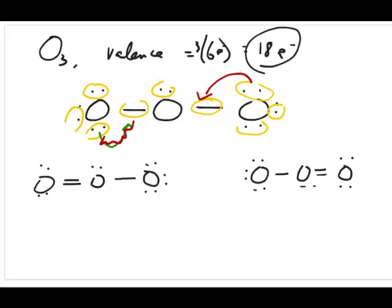If you were to label this oxygen — let's say you label this as oxygen 1, 2, 3 in both cases — these two structures are not the same because in one case, between oxygens 1 and 2, you have a double bond. Let's call this structure A. And in structure B, between oxygen 1 and 2, you have a single bond. And vice versa — in structure A, you have a single bond between oxygen 2 and 3, and in structure B, you have a double bond.